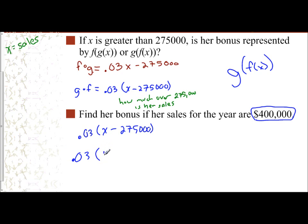So we need to figure out how much over that is. So 0.03 times $400,000 minus $275,000, which is 0.03 times $125,000, which gives me a total of $3,750. And so that is her bonus.